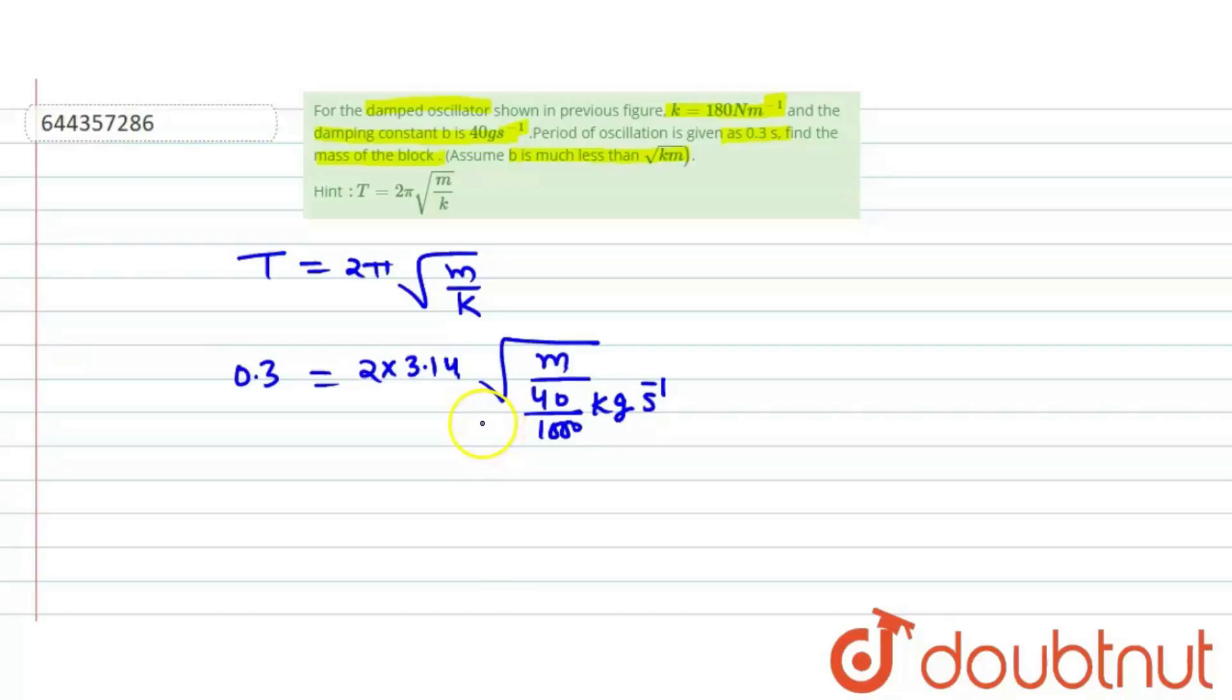Since b is much less than root km, we can use this approximation. k is 180 meter.